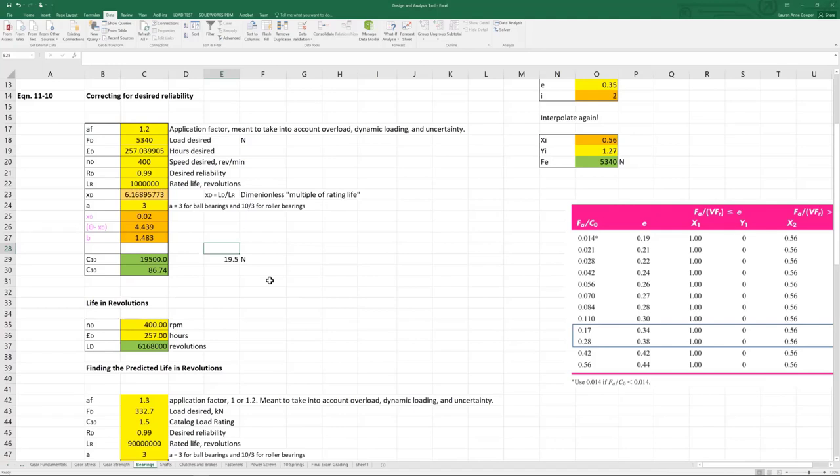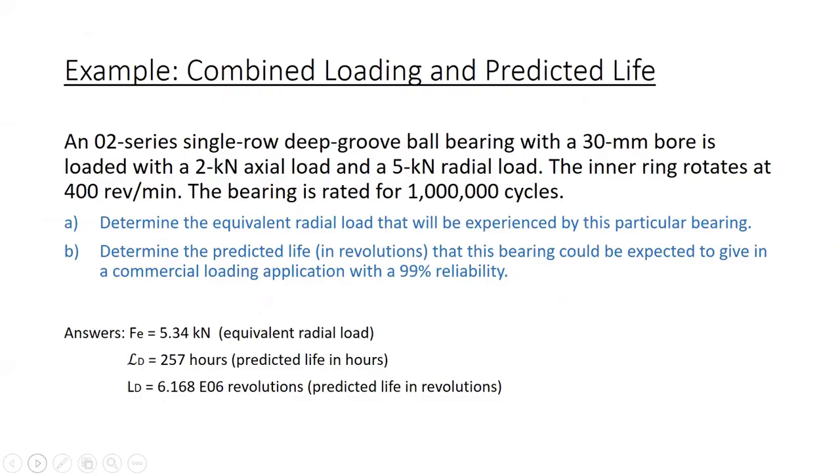So we get 257 hours, which isn't very long. Why is that? Because I just made up the problem. So what would happen in a situation where we really did need a bearing to carry a 2 kilonewton axial load and a 5 kilonewton radial load, we probably wouldn't be choosing an O2 series 30 millimeter bore bearing. We'd need to choose something that had a higher capacity. But this just shows you the process. Then the last part of this problem is to determine the predicted life in revolutions. At our speed of 400 RPM, if it had a life of 257 hours, we would be looking at 6,168,000 revolutions.